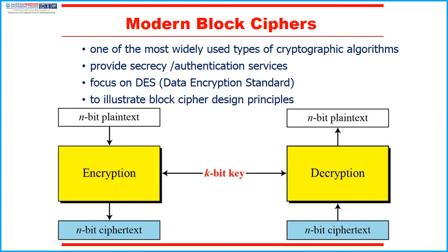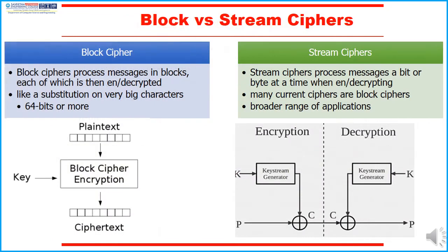Similarly, on the decryption side it uses the same procedure. Now we will see the important difference between block cipher and stream cipher. Though both look similar there are a few minute differences. In block ciphers, messages are processed in blocks, each of which is then encrypted or decrypted — it is like a substitution on very big characters, using 64 bits or more. Whereas in stream ciphers, messages are processed a bit or a byte at a time during encryption or decryption. Many current ciphers use block ciphers, and it is widely used.